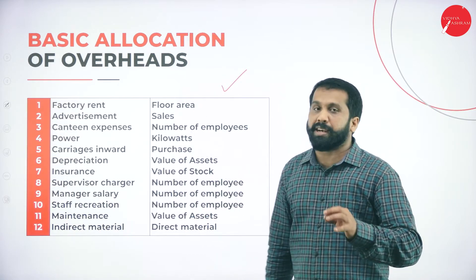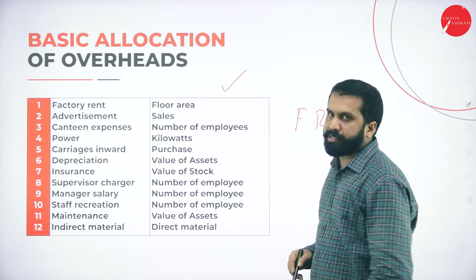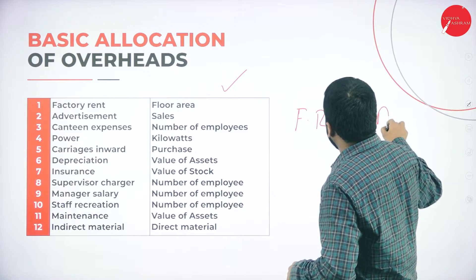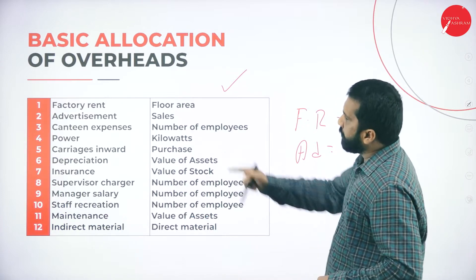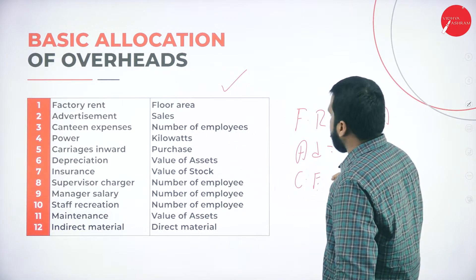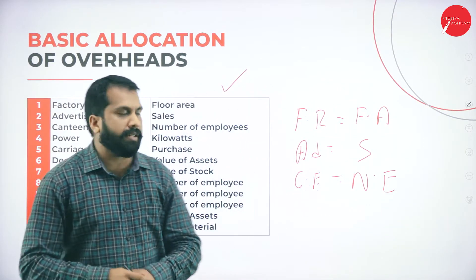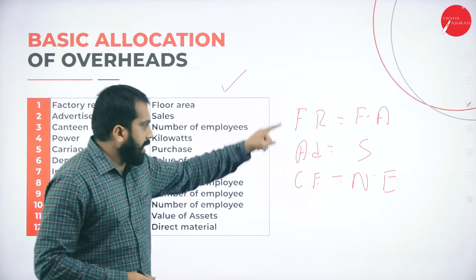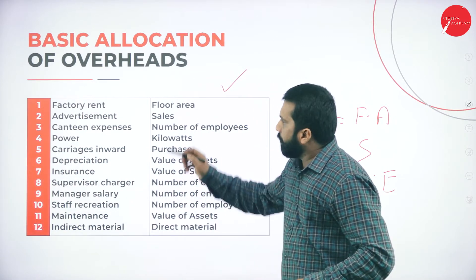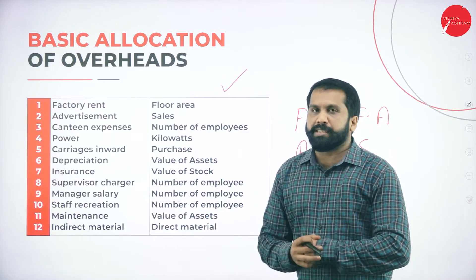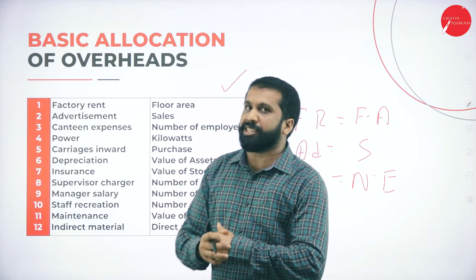For example, they will ask you factory rent — your answer must be floor area. They will ask you advertisement — your answer is sales. They will ask you canteen expenses — your answer is number of employees. Like this, the left side will be your question and the right side will be your answer. Remember this. Now, what is this allocation? Allocation means — for example, factory rent is on the basis of floor area. Let me take the example of Vidyashram college itself.